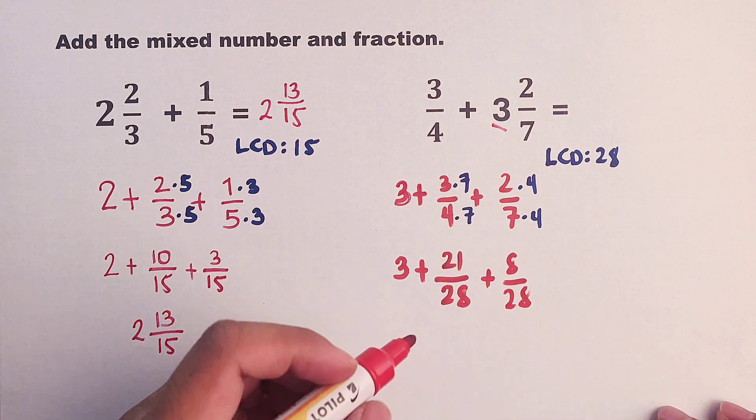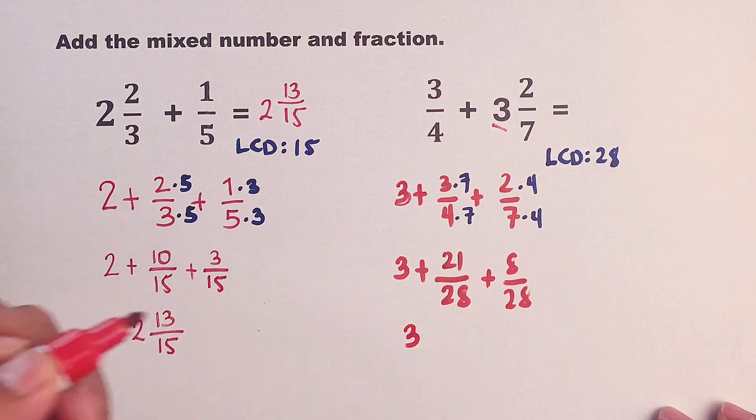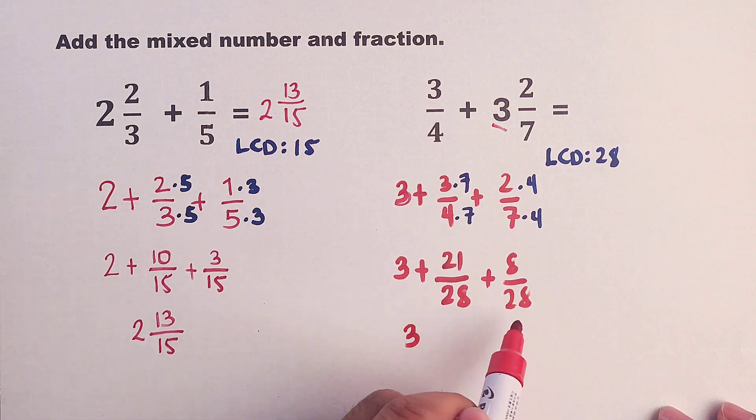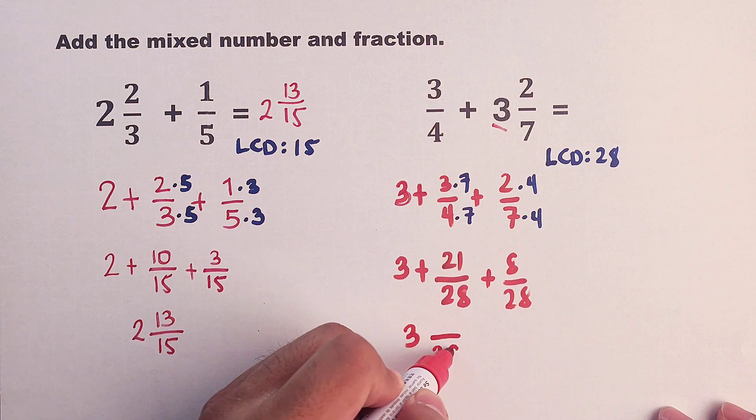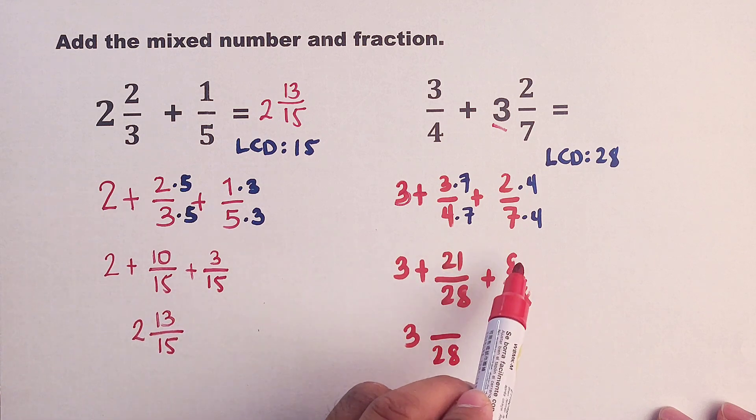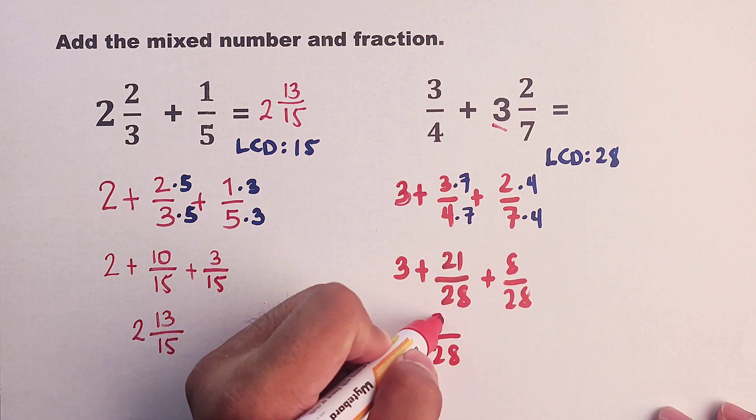Now as you can see, we can copy the whole number which is 3. And now, since the denominators are the same, we can simply copy it to 28. As for the numerator, 21 plus 8, that is 29.